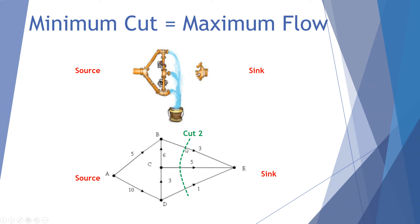So here's cut 2 on our directed and weighted graph. So it's cut through from D to E, a value of 1, from C to E, a value of 5, and B to E, a value of 3. So 1, 5, and 3 gives us a capacity for cut 2 of 9. And that would completely cut off any flow from the source to the sink.